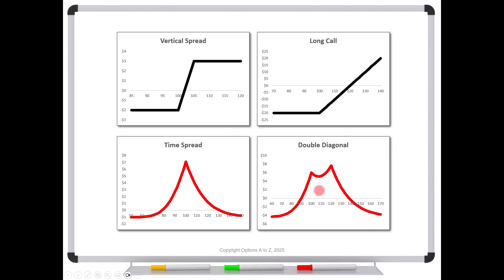See, down here, this is not true for the double diagonal or for the time spread. Yes, your short option might be expired and be either delta zero or delta one. But your long option isn't. It still has time value. And that's what's causing these curves.